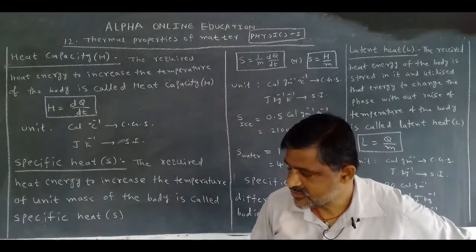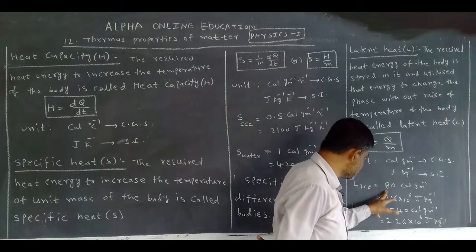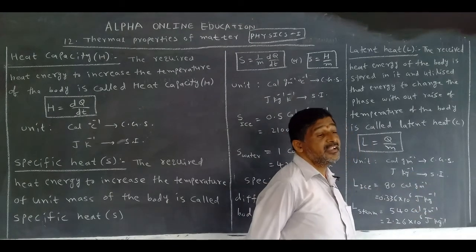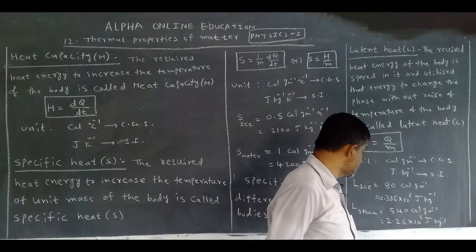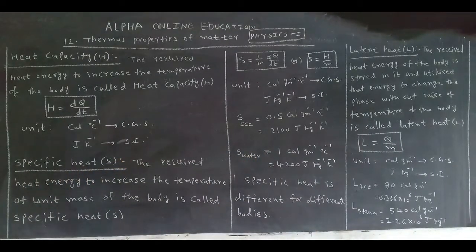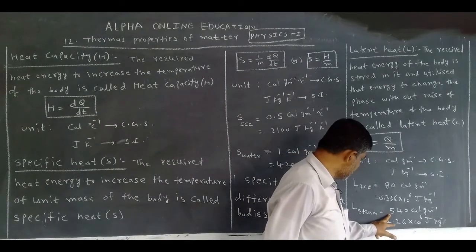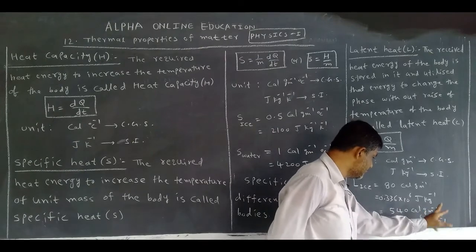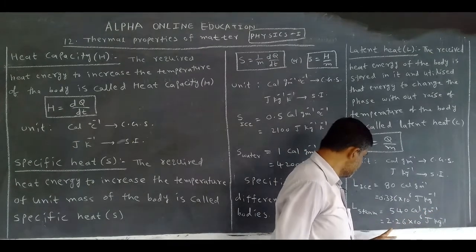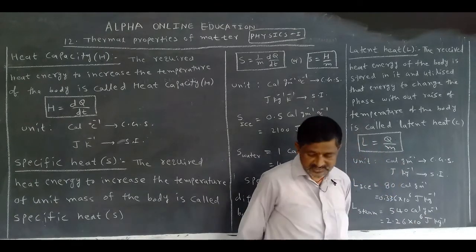Latent heat: the received heat energy of the body is stored in it and utilized to change the phase without rise of temperature. Mathematical expression: L equals Q by M. Unit: calorie, gram inverse in CGS; Joule, kg inverse in SI. The latent heat of ice is 80 calorie per gram in CGS, and 0.336 × 10⁶ Joule per kg in SI. The latent heat of steam is 540 calorie per gram in CGS, and 2.26 × 10⁶ Joule per kg in SI.